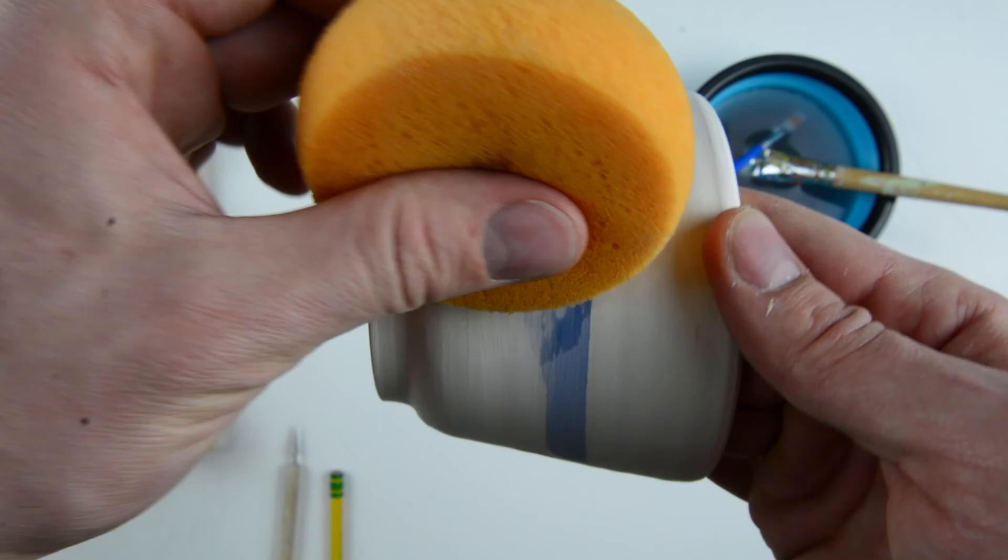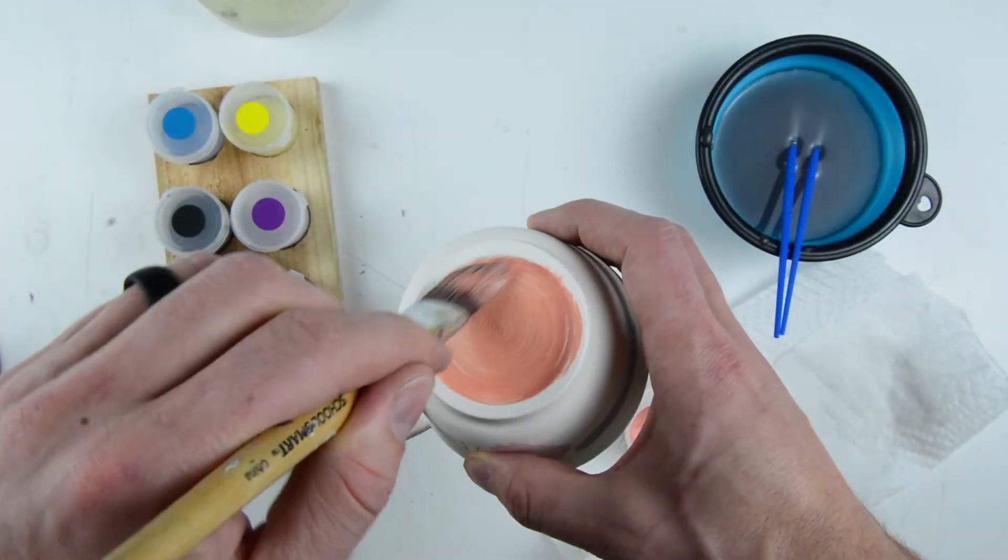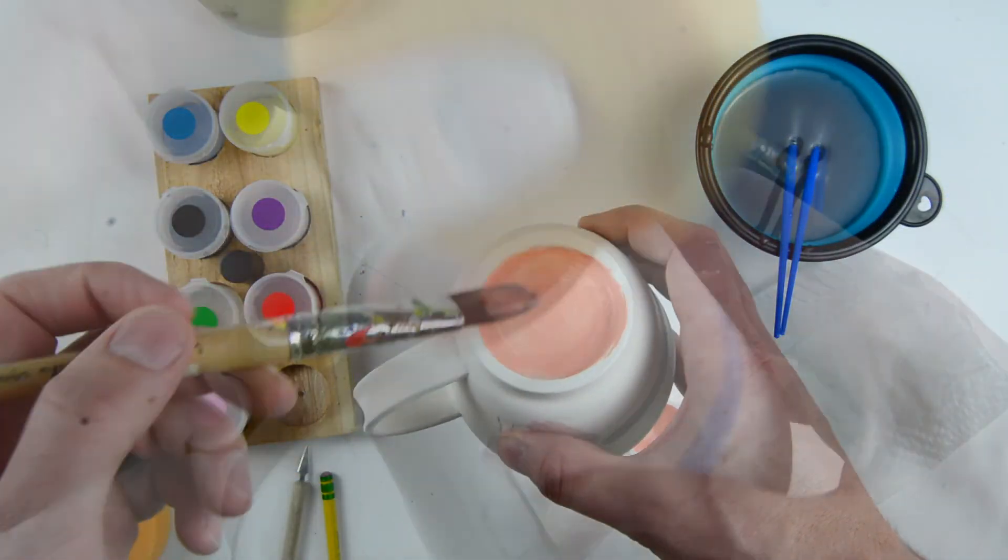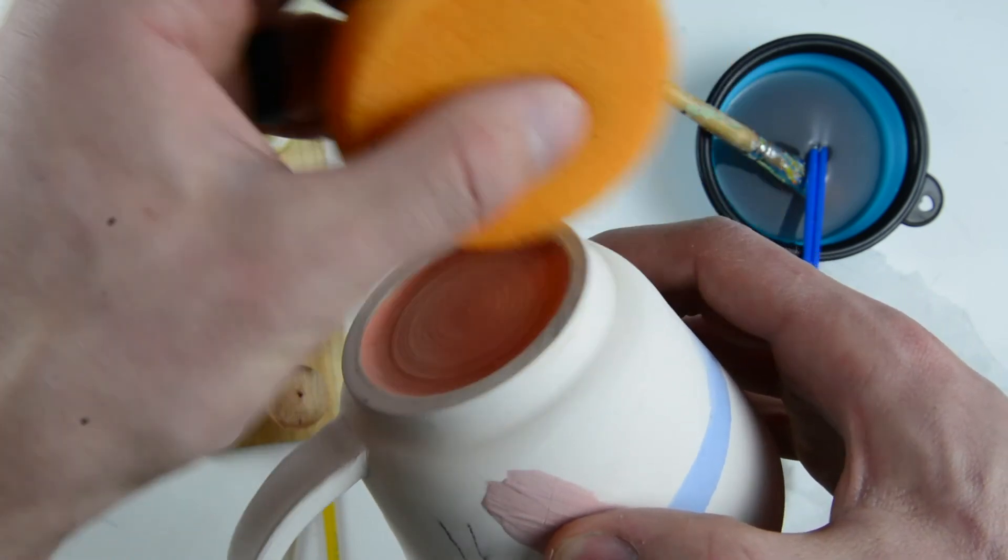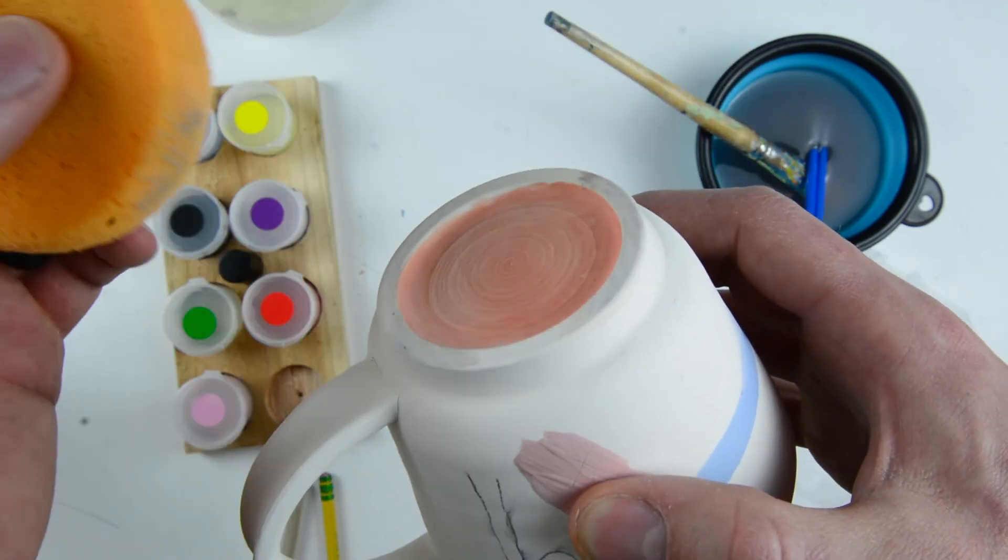As long as you do that, you can get a pretty clean surface on it. When you paint the bottom of the mug, you can paint the center part, but make sure you get nothing on the foot. If you mess up, you can just take it right off with the sponge.